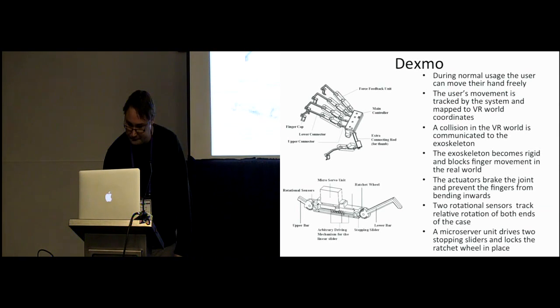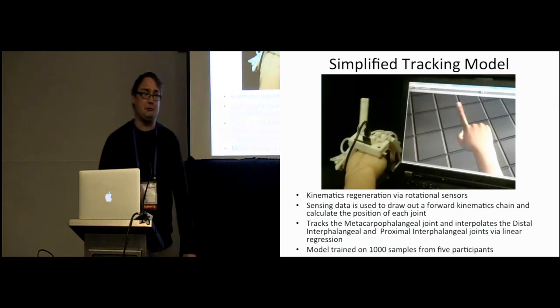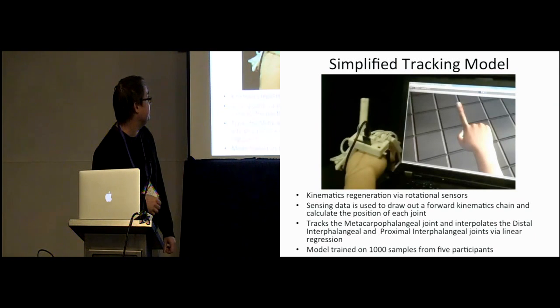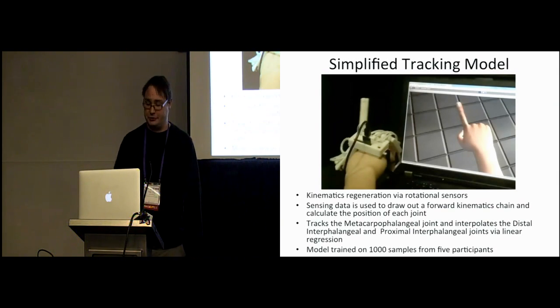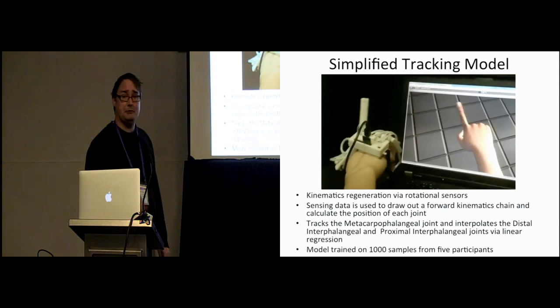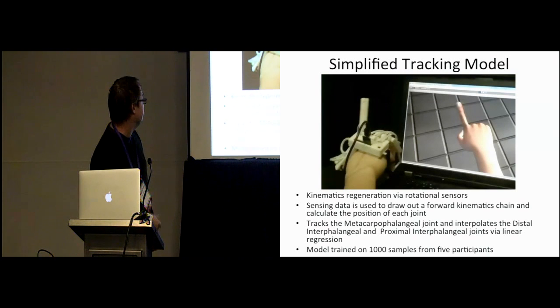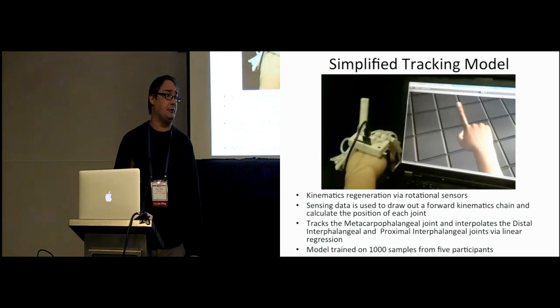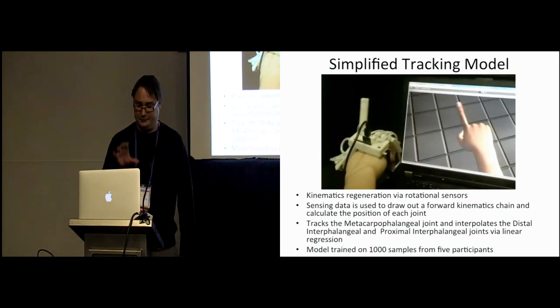I'll show you a video in a second. At the time of the paper, we had a simplified tracking model. Now it's actually a little bit more sophisticated, but let me first talk about it. We basically have rotational sensors attached to each of the joints, and then we get the sensing data, and then we compute the forward kinematic chain using the standard algorithms, and then back-calculate the position of each joint relative to the base of the exoskeleton, and we track the MCP joints, and then interpolate the DIP and the PIP joints via linear regression. We collected a bunch of samples from five representative users, and fit a linear regression model to the system.